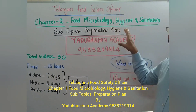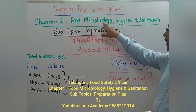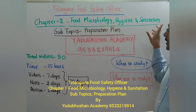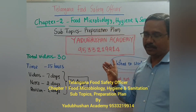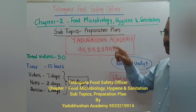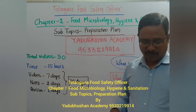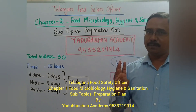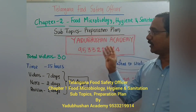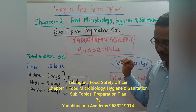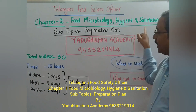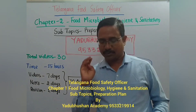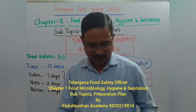The first chapter covers food microbiology and hygiene and sanitation. The second chapter also covers food microbiology and hygiene and sanitation, with the next chapter having 4 topics and 3 topics. The next section is hygiene and sanitation with 7 sub-topics.